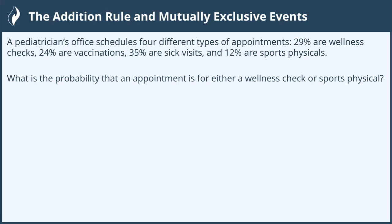The title says 'addition rule and mutually exclusive events.' Before reading the problem, I'm going to write down the general rule and talk about mutually exclusive events. From the last video, I called the addition rule the 'or' case — if I want a probability and I see 'or,' I know I'm going to apply this rule in some way.